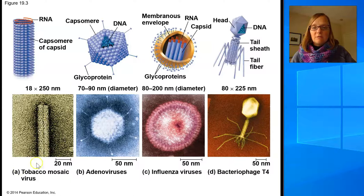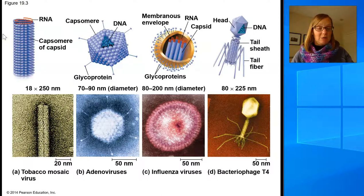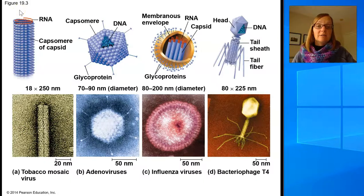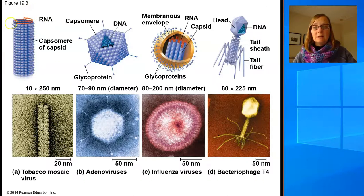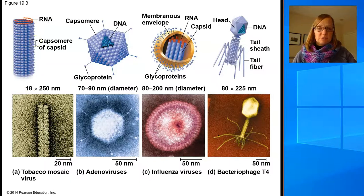The first virus shown here is the tobacco mosaic virus, which is actually a plant virus — yes, even plants can be infected with viruses. The tobacco mosaic virus is one of the first viruses ever discovered by scientists. It is a very simple virus: it has a single-stranded RNA genome, and the capsid, shown here in purple and made out of individual capsomeres, has a cylindrical shape. There's no envelope — it's a very simple virus.